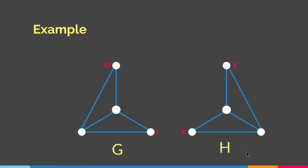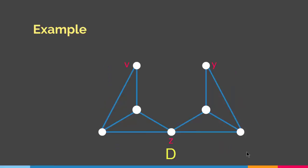We will bring the two vertices V and X together and combine them, and we will add a new edge between W and Y. That is Hajos Construction. As you can see at the end, we will get a new graph that is different from the original two graphs — we did it by deleting edges, combining two vertices, and adding a new edge.